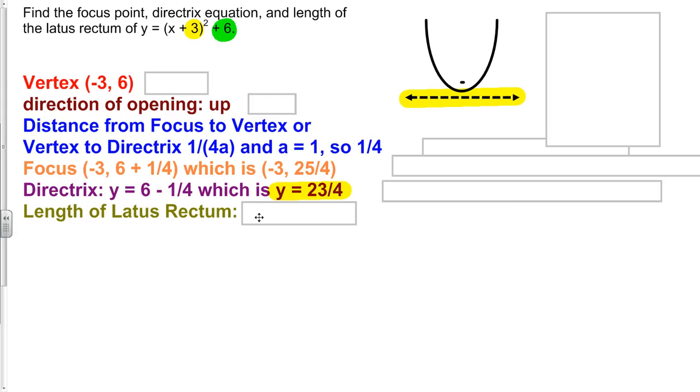Finally, length of your latus rectum, the line that goes through the focus and touches both sides of the parabola here, is going to be 1 over a. a is 1, so simple enough.